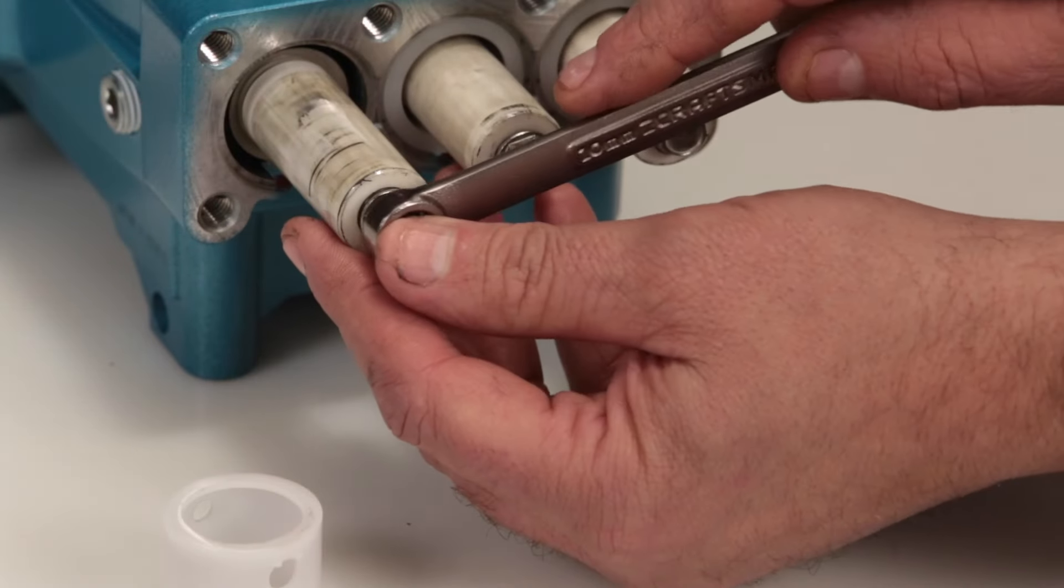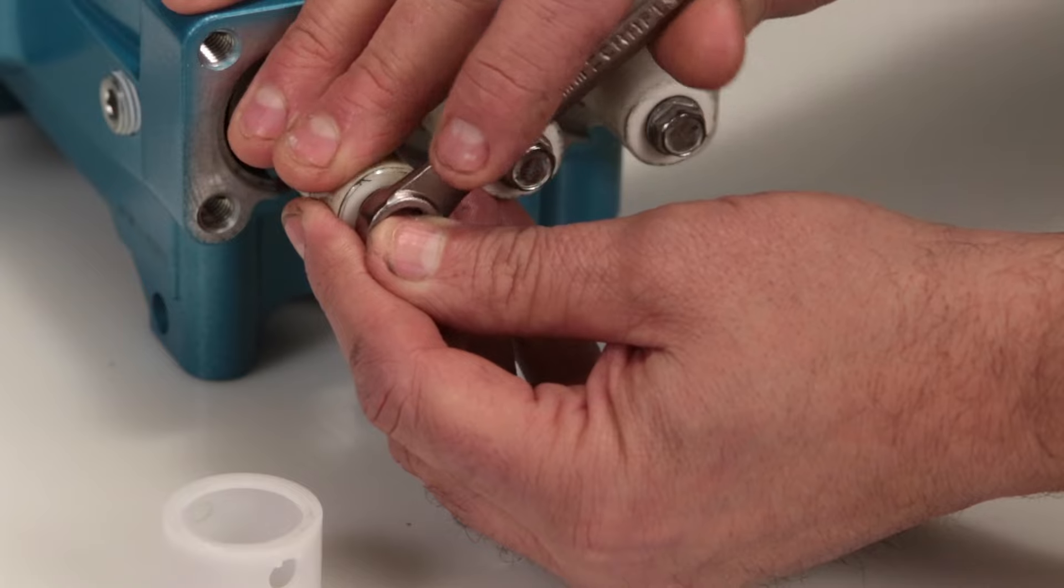Using a 10mm wrench, loosen and remove the plunger retainer and plunger.